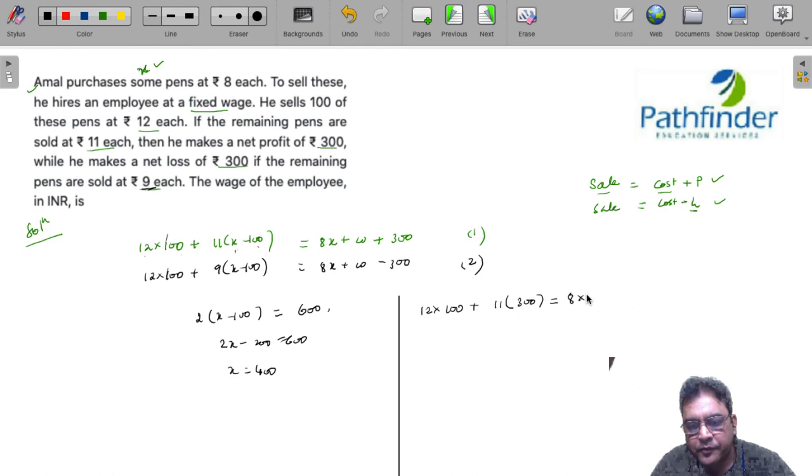Now solving this equation gives you the value of w. 1200 + 3300 = 4500, and 3200 + 300 = 3500. So 4500 on the left-hand side minus 3500 gives me ₹1000 as the wage, which is your answer.